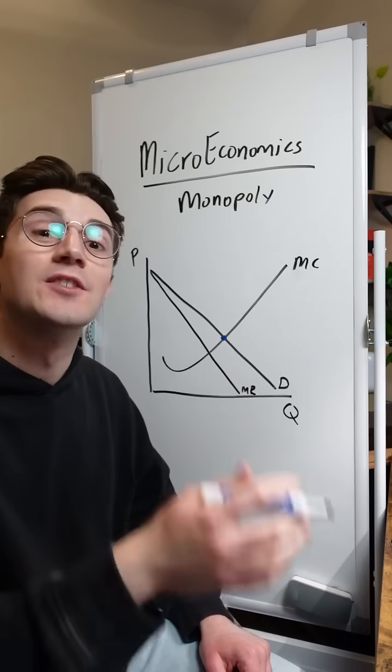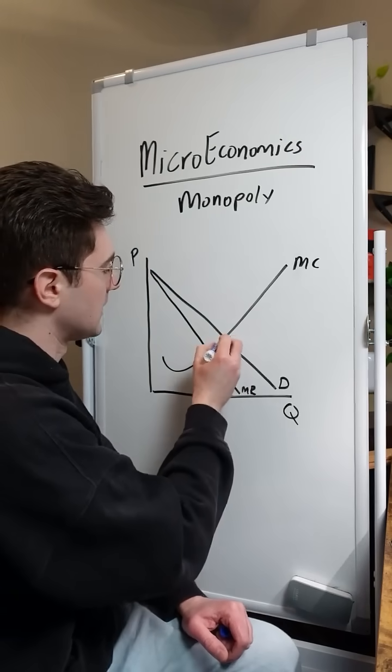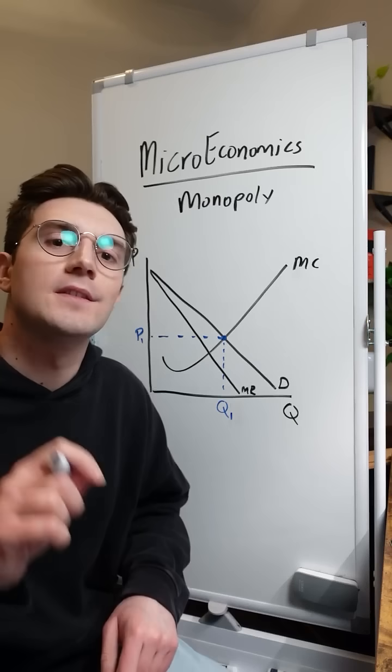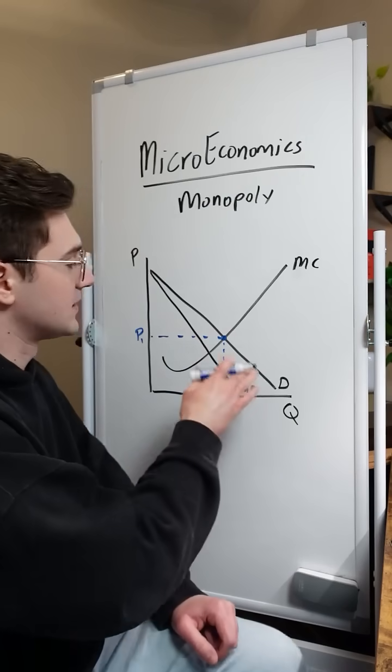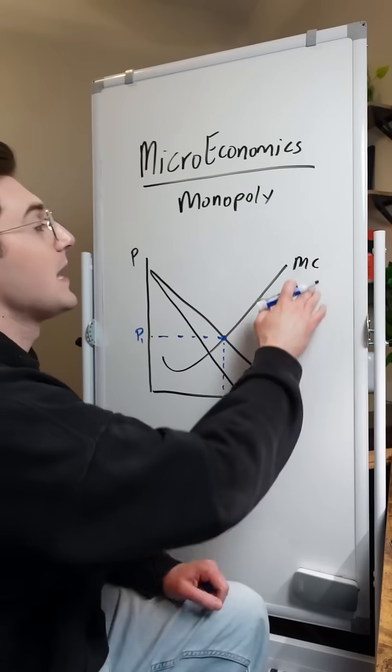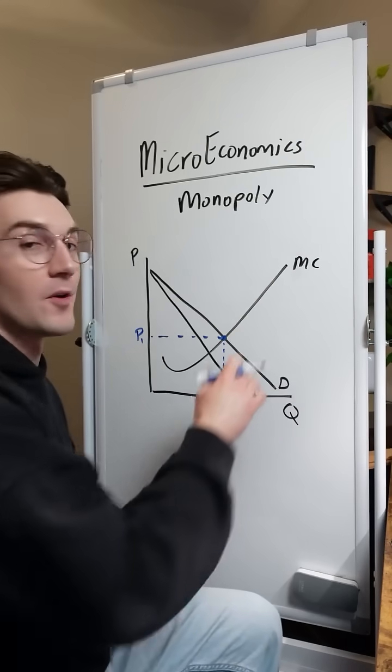If this monopoly were being socially optimal, they'd produce right here at this price and this quantity. This is the socially optimal point of production, because it's the intersection point between the demand curve and the supply curve for monopolies, marginal cost.